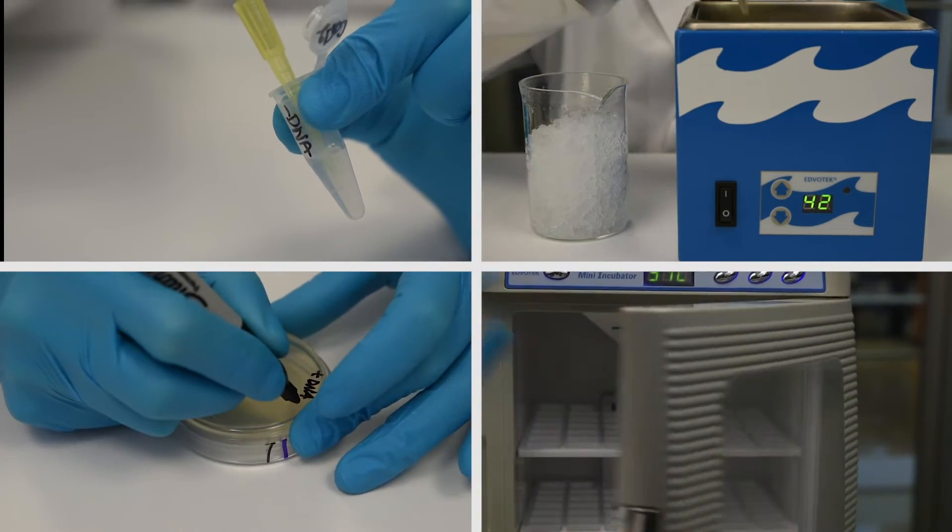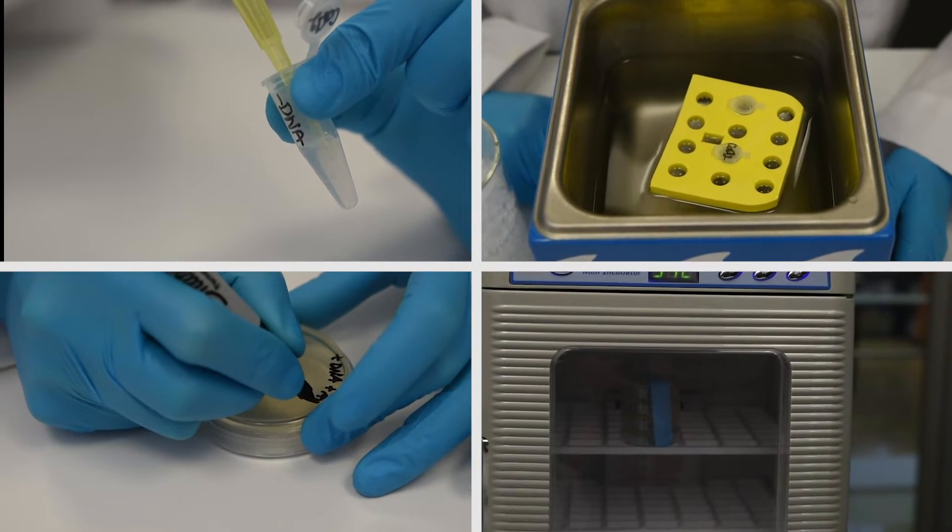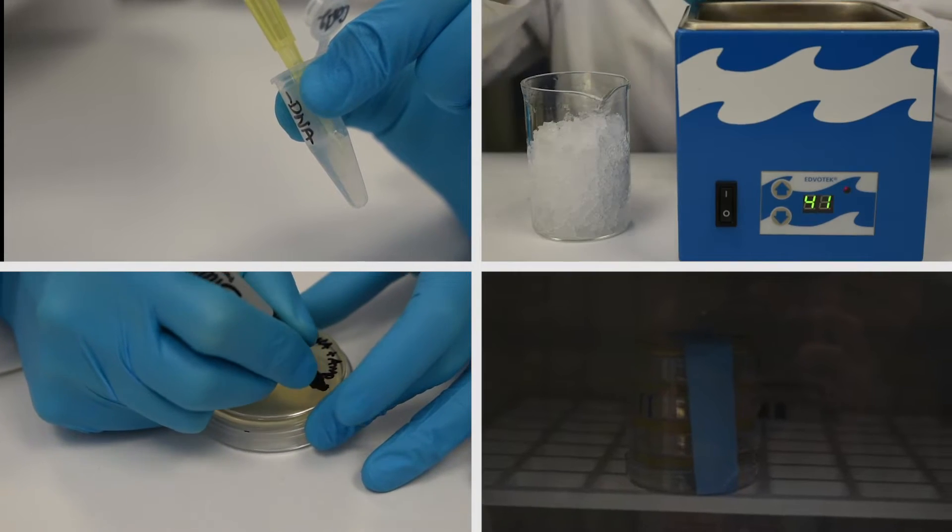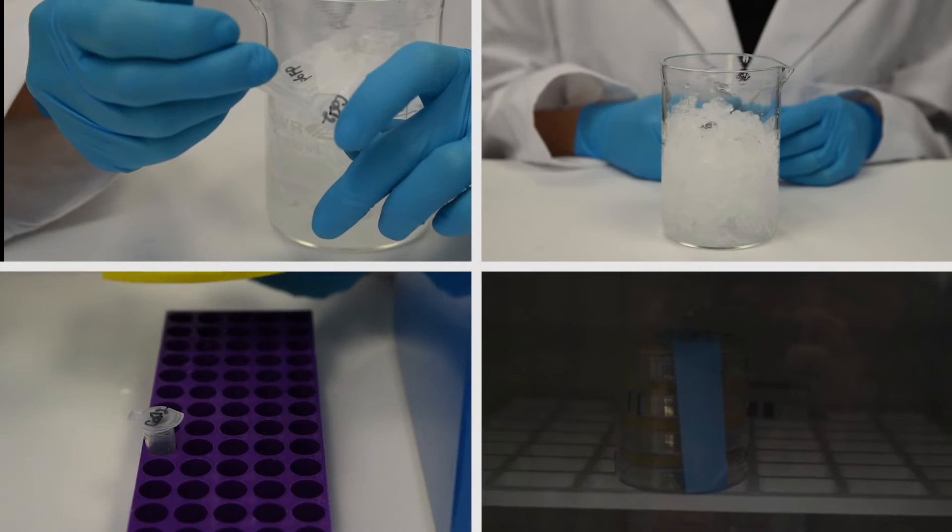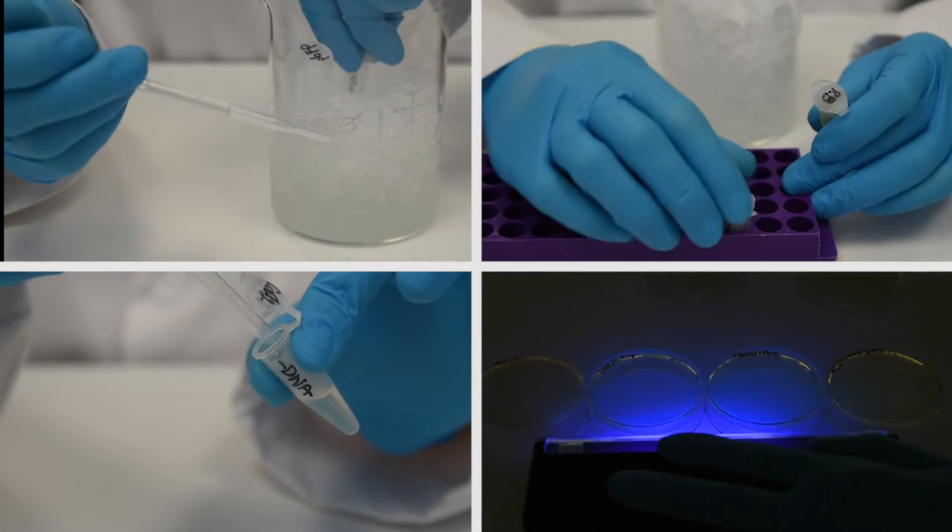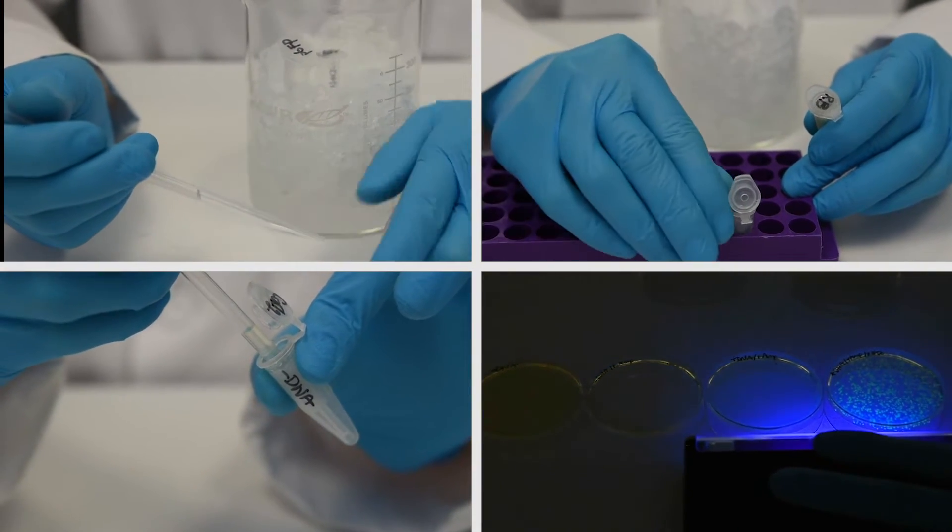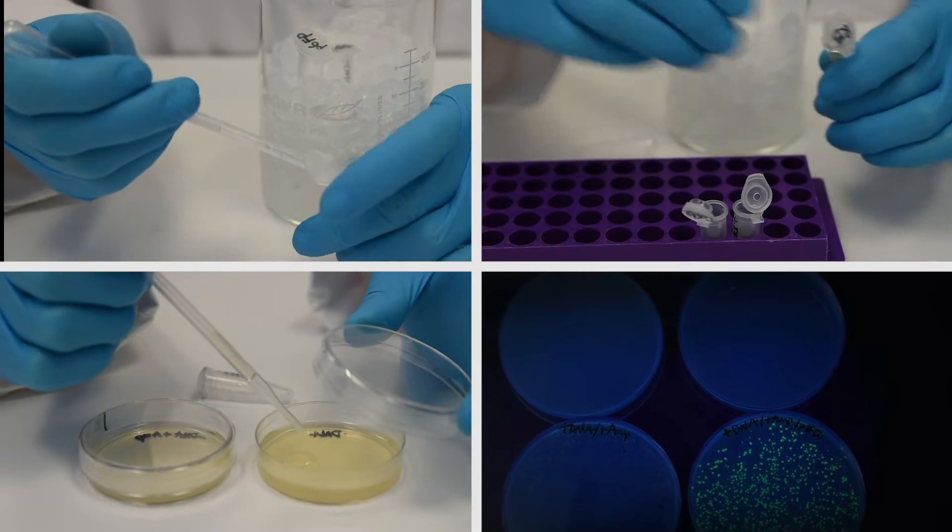Next, the GFP plasmid will be added to half of the cells before they are briefly heat-shocked. Finally, the bacteria will be allowed to recover before they are plated onto LB agar plates and incubated at 37 degrees Celsius overnight.